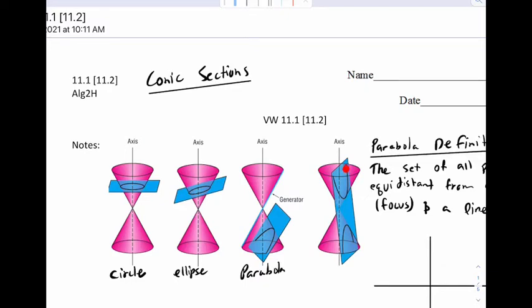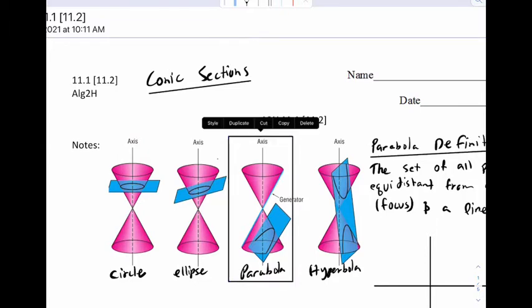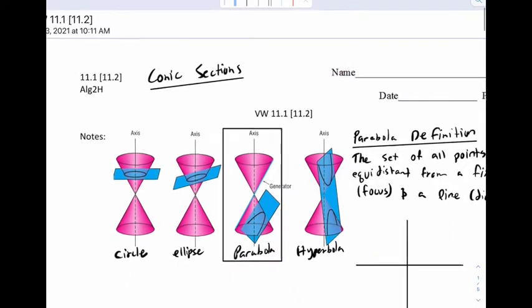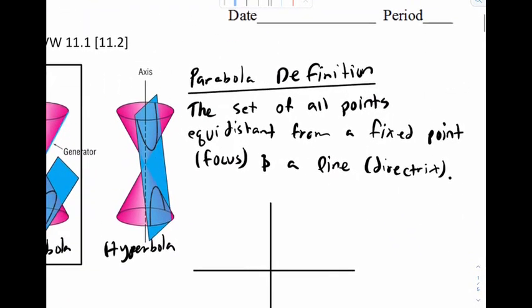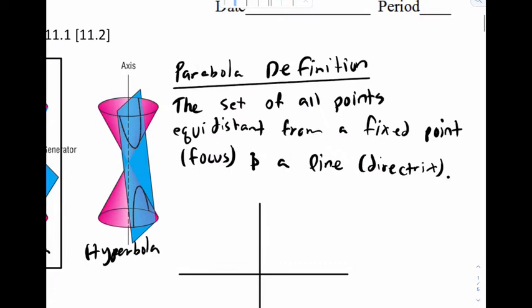And if you cut it along both of the cones, there's two parabolas. This is called a hyperbola. So we're going to start our study right here and discuss what actually is a parabola. Here's the pure definition for a parabola: the set of all points equidistant from a fixed point called a focus and a line called directrix.